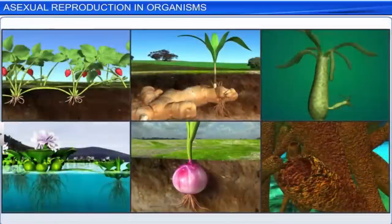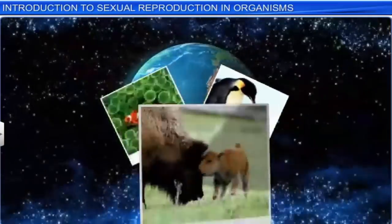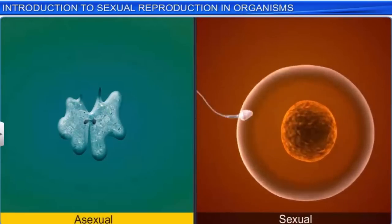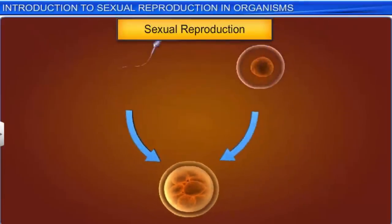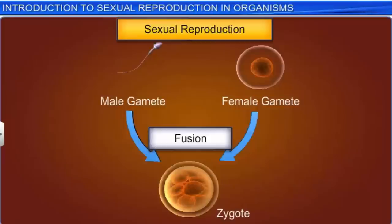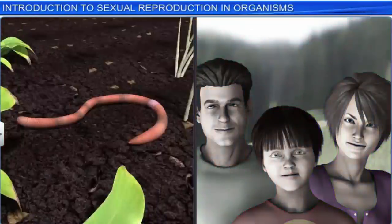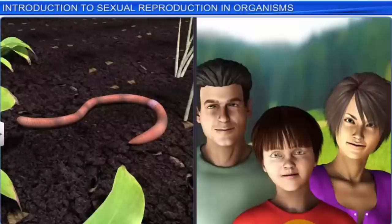Asexual reproduction, an important biological process that ensures continuity of life, occurs differently in different organisms. Reproduction, an important biological process occurring in living organisms, ensures continuity of life. Organisms reproduce either asexually or sexually. In the case of sexual reproduction, we see the fusion of male and female gametes, which are either produced by the same individual or by different individuals of the opposite sex. Though organisms which engage in sexual reproduction vary in their external and internal structure, the pattern of sexual reproduction remains quite similar.